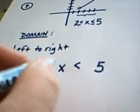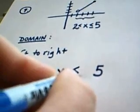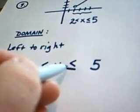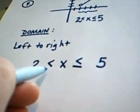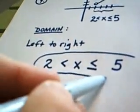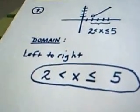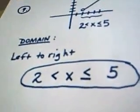These inequality signs both point to the left when you're sandwiching. We put an equals here because 5 is included, and we don't put an equals there because 2 is excluded. And this is then the domain of that original graph.